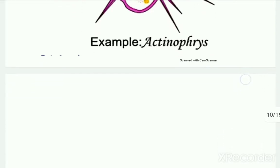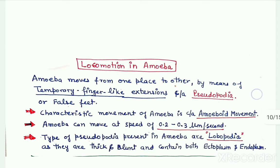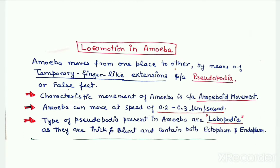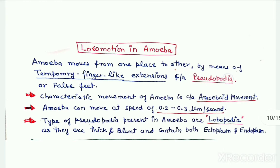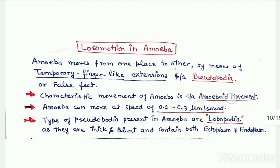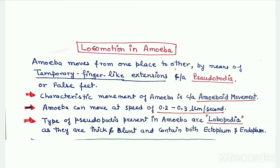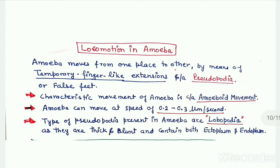Coming back to locomotion in case of amoeba with help of pseudopodium, the specific type of movement of amoeba is termed amoeboid movement, which is a very slow creeping type of movement. Amoeba creeps on a solid substratum, and this type of movement is called amoeboid movement, which is a comparatively slow type of movement.